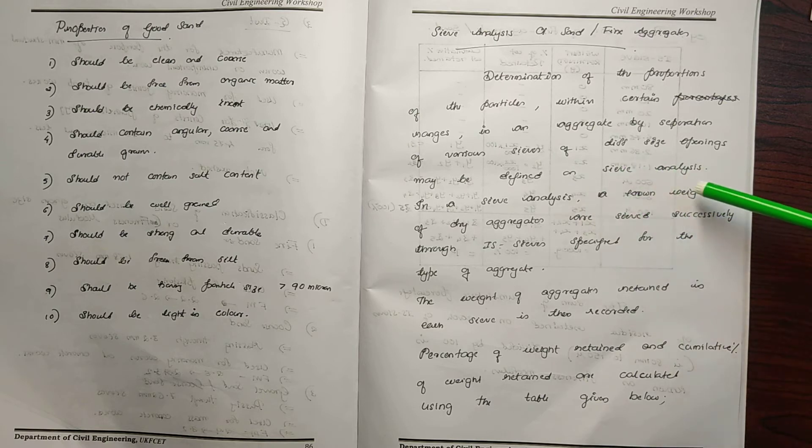For sieve analysis, a known weight of 1.5 kilograms of dry aggregates are sieved successively through IS sieves specified for the type of aggregate.